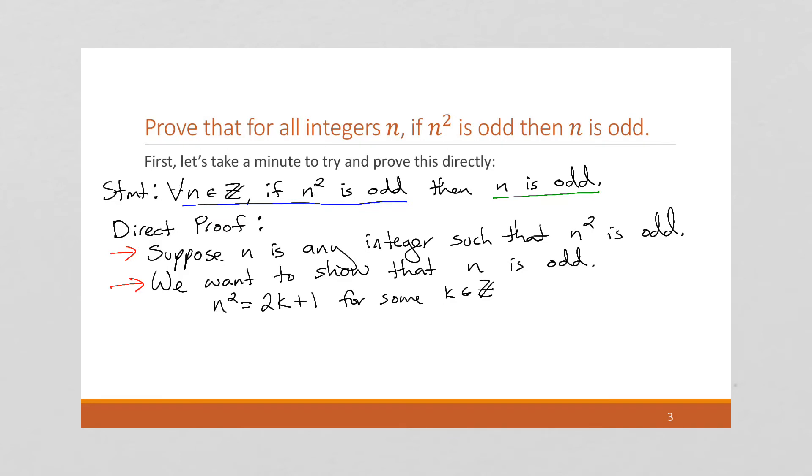So if n² = 2k + 1 for some integer k, then n = ±√(2k + 1). Now what? This proof is going to be very difficult to solve directly. It may be possible if you get into enough nitty-gritty algebra, but what you would have to do is show that this right here is odd. And honestly, I don't know how to do that.